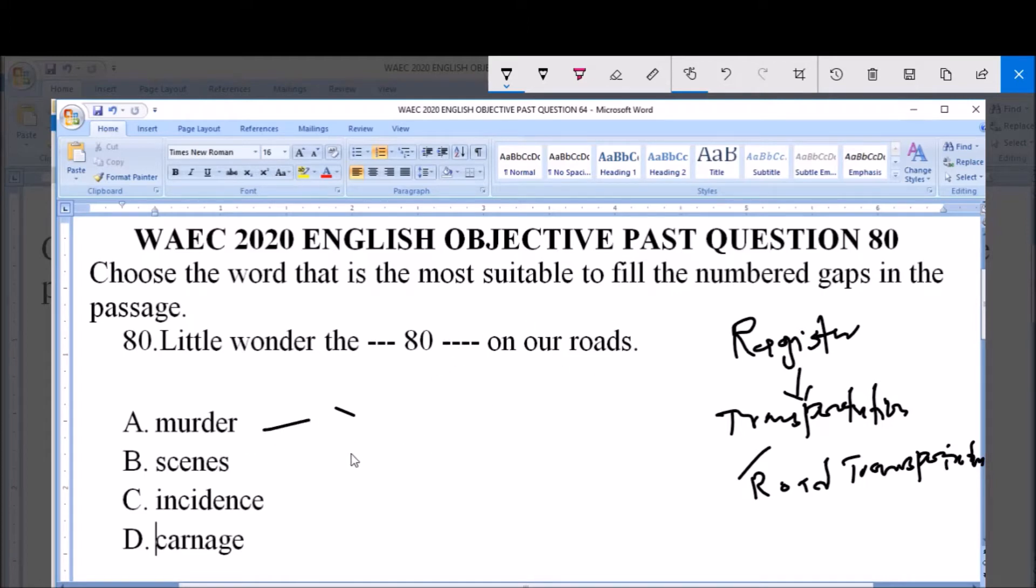The options are: A. murder, B. scenes, C. incidents, D. carnage. Now murder cannot function here. I wish the writer used the word killing.